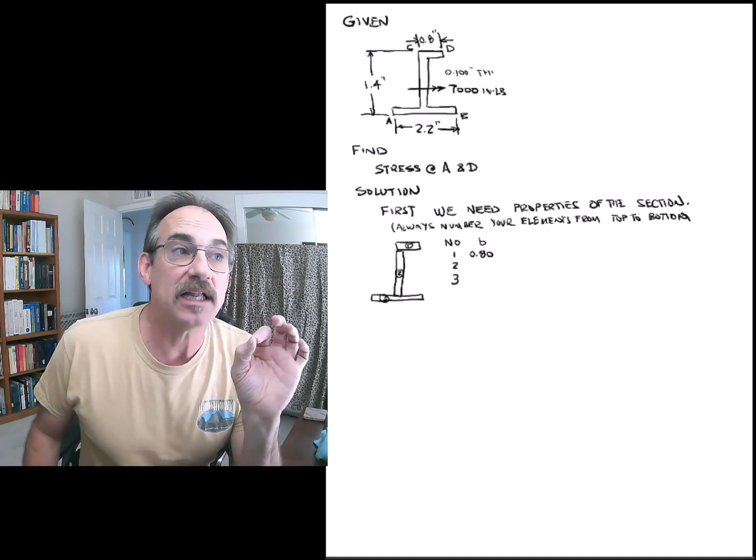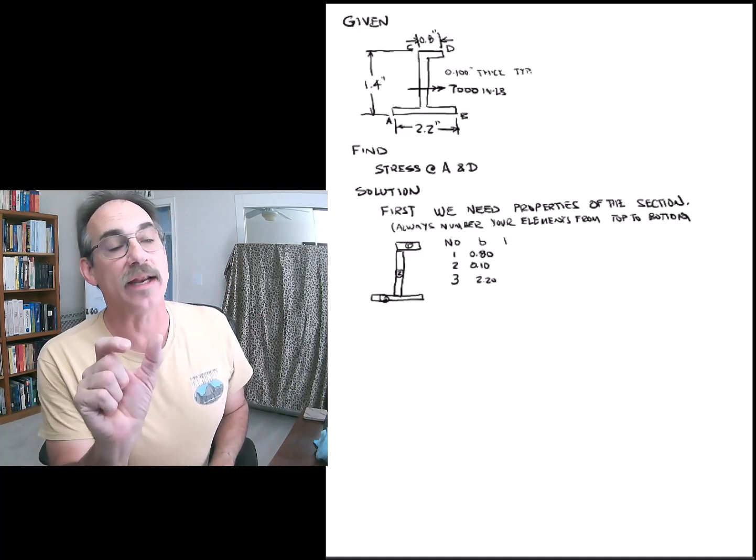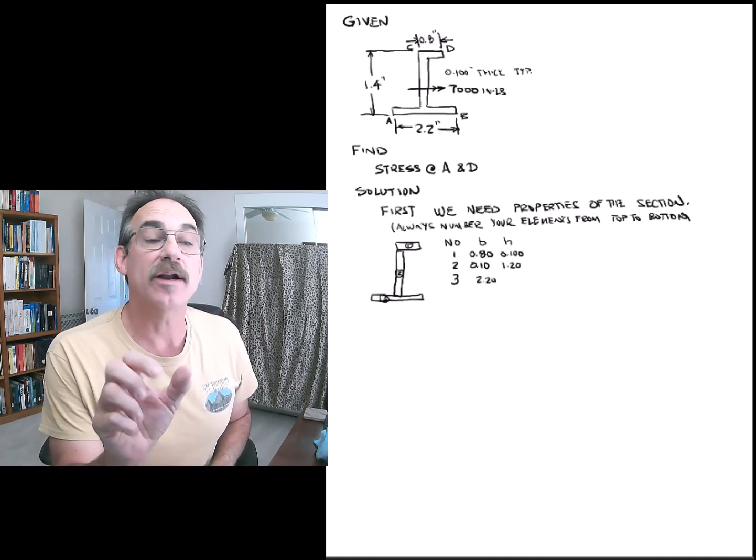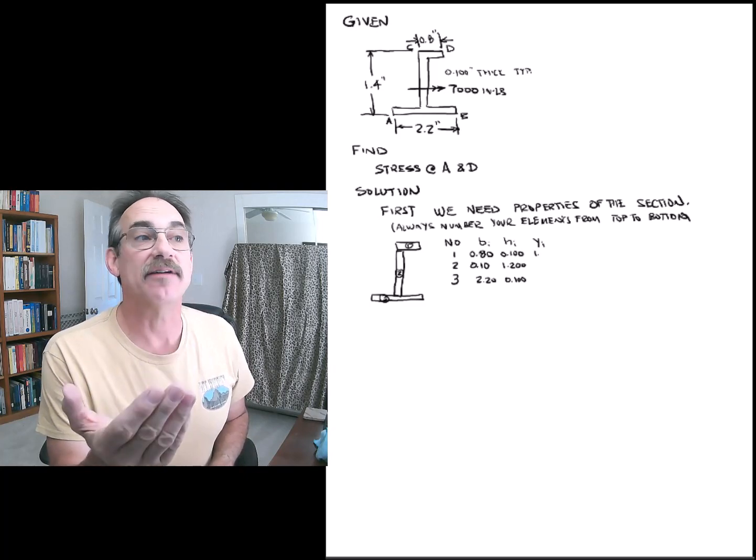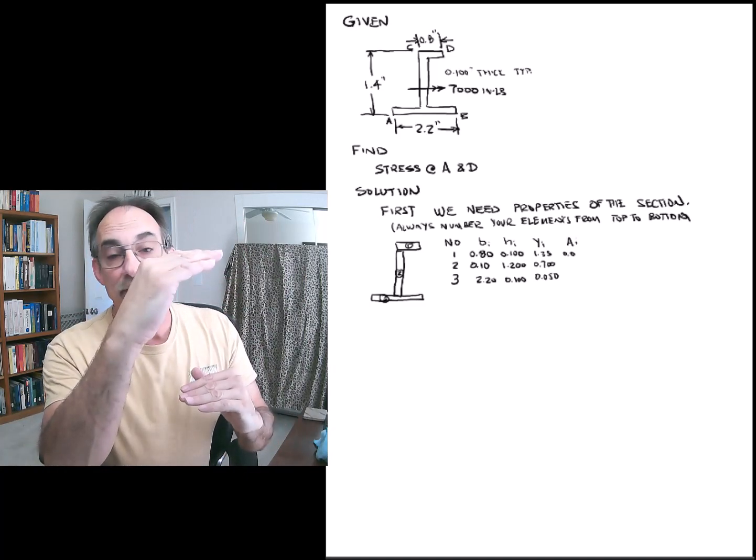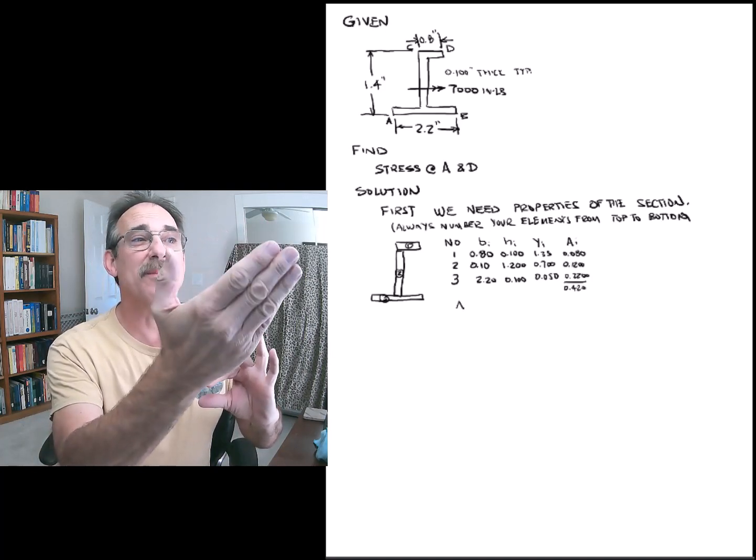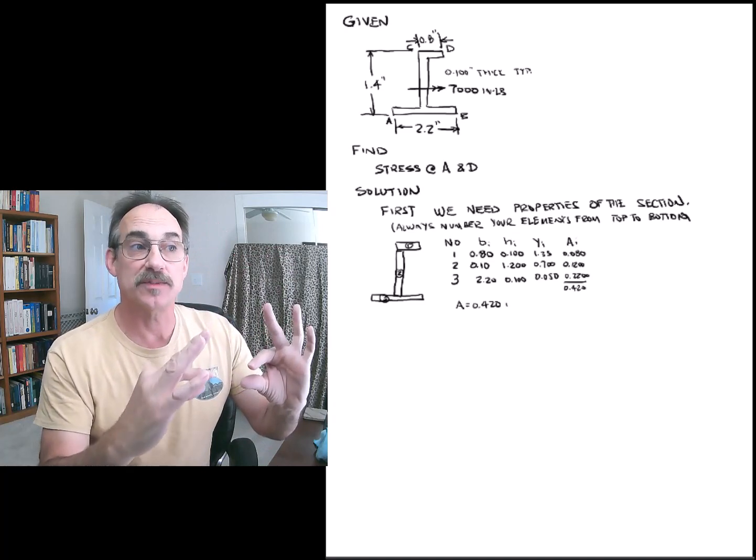We want the width of each element and the height of each element. We say our first element is 0.8, our second element is 0.1, our third element is 2.2. Then we identify the height, which is 0.1, and then we say 1.4 minus 0.1 at the top, minus 0.1 at the bottom, so it's 1.2. Our last one is 0.1.